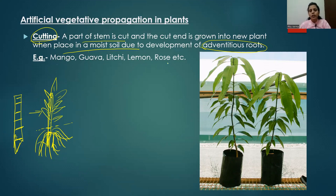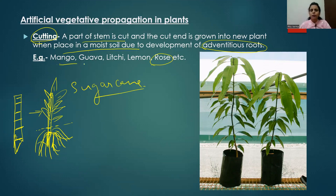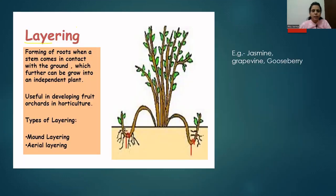This process of cutting is very famous especially in roses, sugarcane, and bougainvillea, because bougainvillea is an ornamental plant. Other examples include sugarcane, bougainvillea, mango, guava, lychee, and lemon.